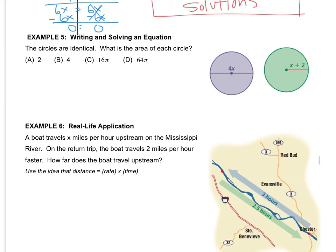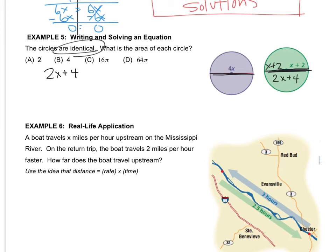Now our next example actually has a solution. It's multiple choice, and the choices are not no solution or infinite number, so there is an actual solution. The circles are identical — what is the area of each circle? The radius goes halfway from the center to the edge, and this is a diameter. So going across the green circle, both sides should be equal because the circles are identical. So x plus 2 on one side, and the other side is also x plus 2. Combining those gives you 2x plus 4 as the whole length across. So 2x plus 4 equals 4x.